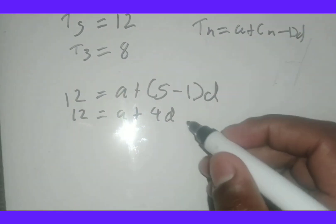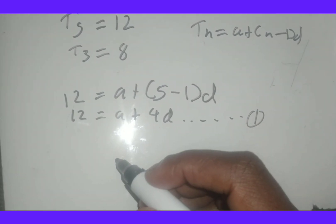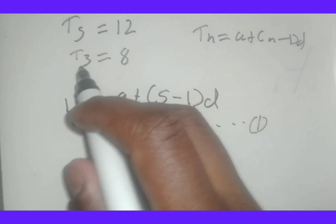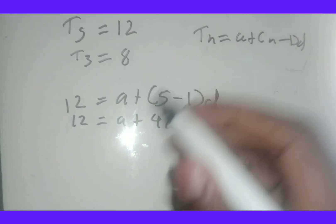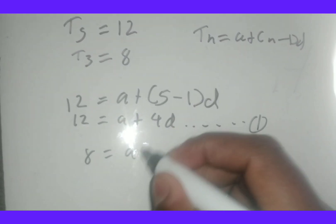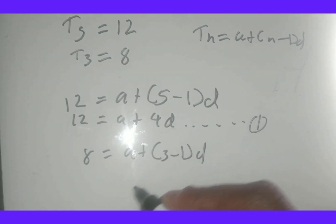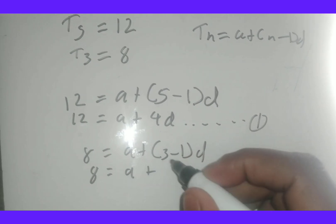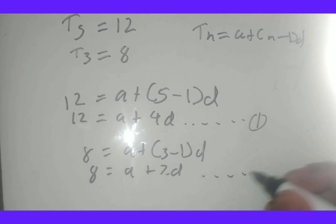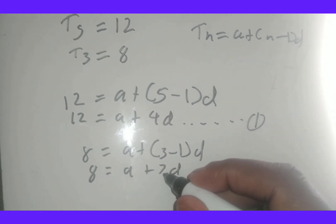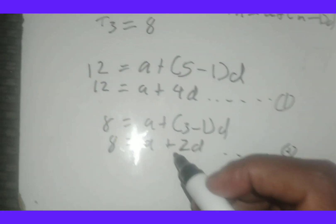We create the second equation using the second piece of information. We're told the third term equals 8, so we say 8 equals a plus, with n being 3, we get 3 minus 1 which is 2, so 2d. That's our second equation. Now I'll create equation 3 by rearranging — using the substitution method.